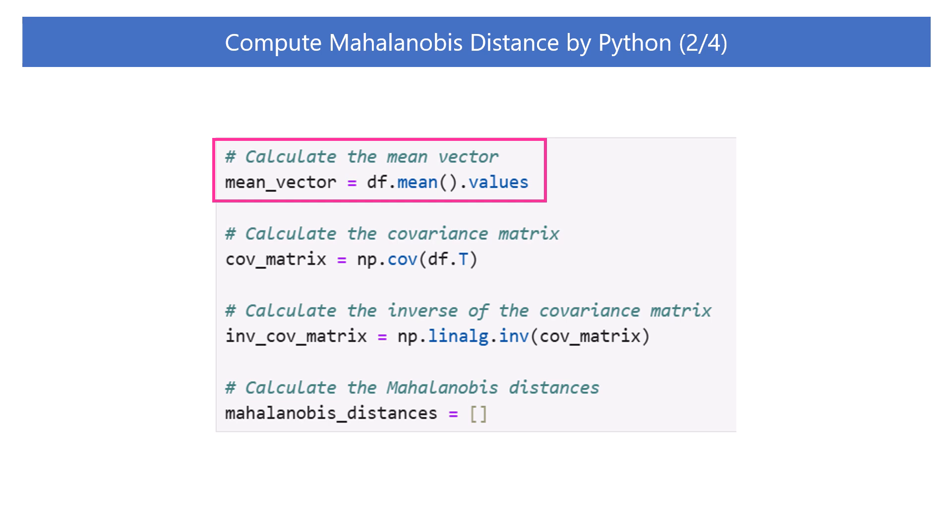First, let's calculate the mean vector. Using DF.mean, we can calculate the average of each column in the dataframe DF. It returns the result as a Pandas Series object. Since the mean function returns the result in Pandas Series type, we use the values method to convert the result to a NumPy array.